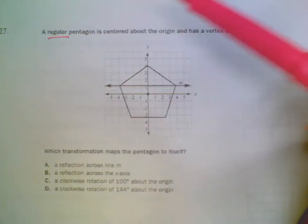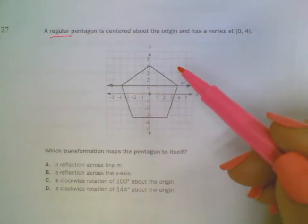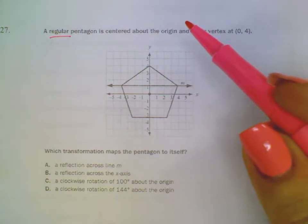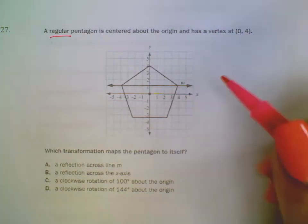Regular means all the side lengths are the same, and all of the angles are the same as well. That is useful information that we'll come to in just a second.